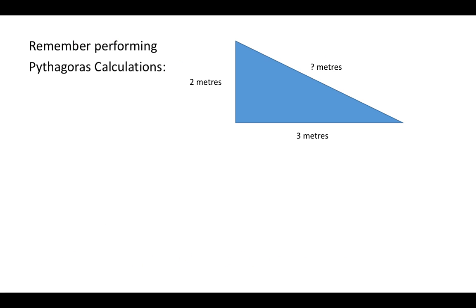So let's go back and look back at a Pythagoras calculation that you might have done. So in this triangle, we're trying to calculate the big side when the other two sides are 2 and 3 metres. So start off by using Pythagoras' formula.